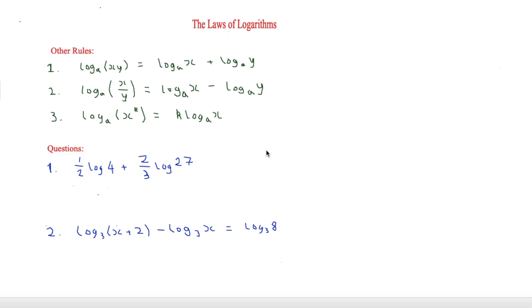The next three rules are slightly more complicated and will frequently come up. The first one is log base a of x times y equals log base a of x plus log base a of y, so adding goes to multiplication. Number two is the opposite: log base a of x divided by y equals log base a of x minus log base a of y. The final one includes powers: log base a of x to the power of k means that k can go to the front, so it's k times log base a of x. To put this into context, we'll now look at a couple of questions.